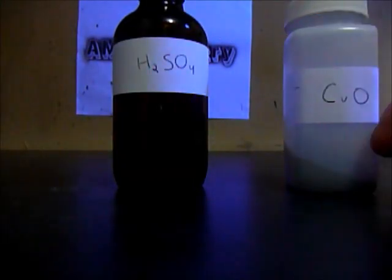Hey guys. Today I will show you how to make copper sulfate pentahydrate. So the chemicals you will be needing are sulfuric acid and copper oxide.